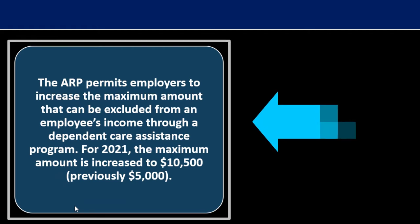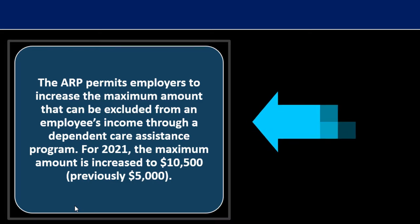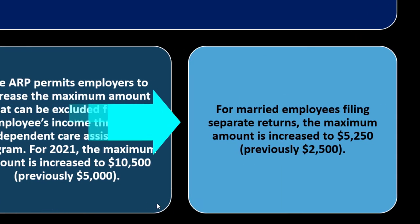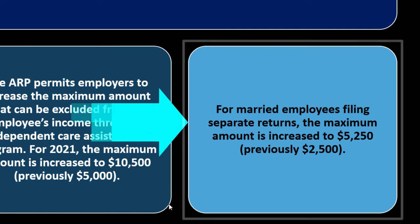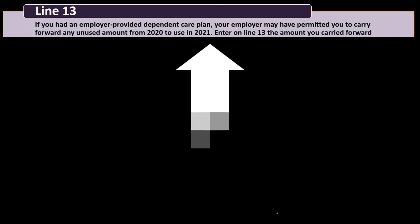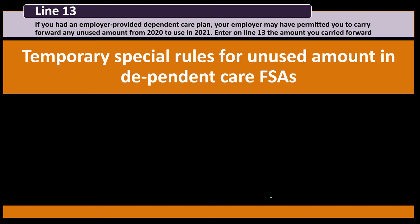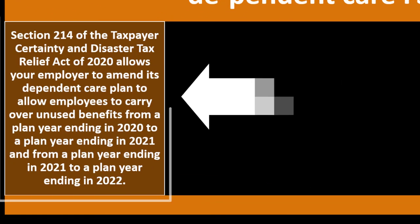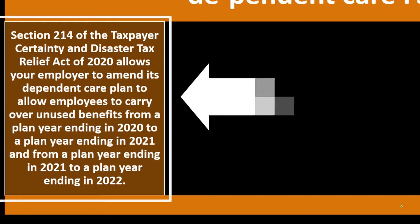The ARP permits employers to increase the maximum amount that can be excluded from an employee's income through a dependent care assistance program. For 2021, the maximum amount increased to $10,500 — that's generally the cap for the ability to take advantage of that program and reduce the amount in box 1 of the W-2. For married employees filing separately, the maximum is increased to $5,250 (previously $2,500).